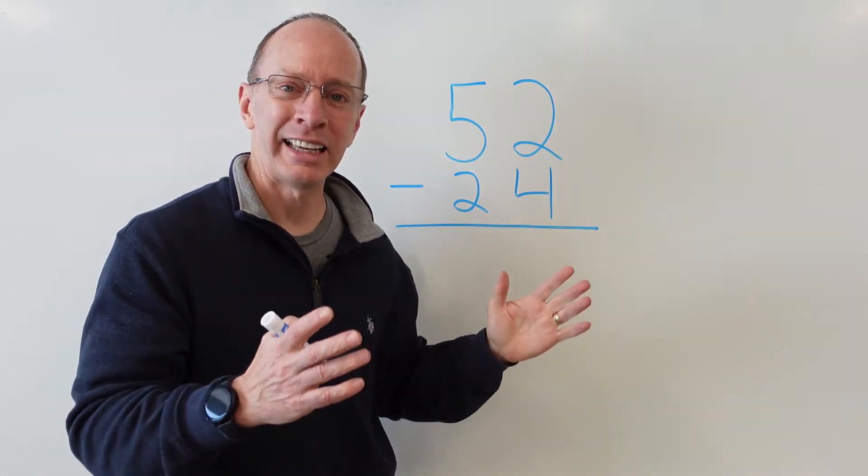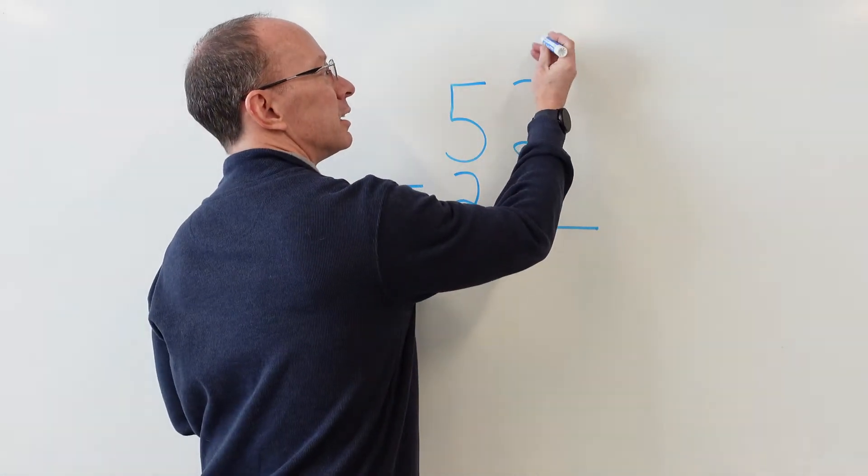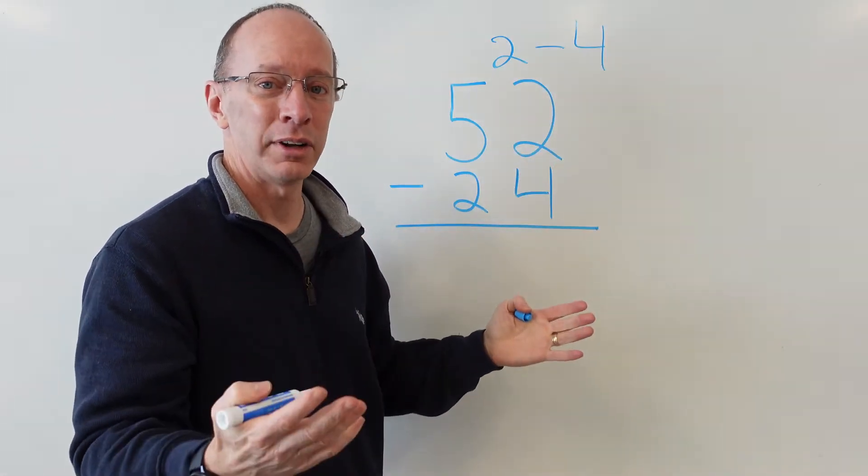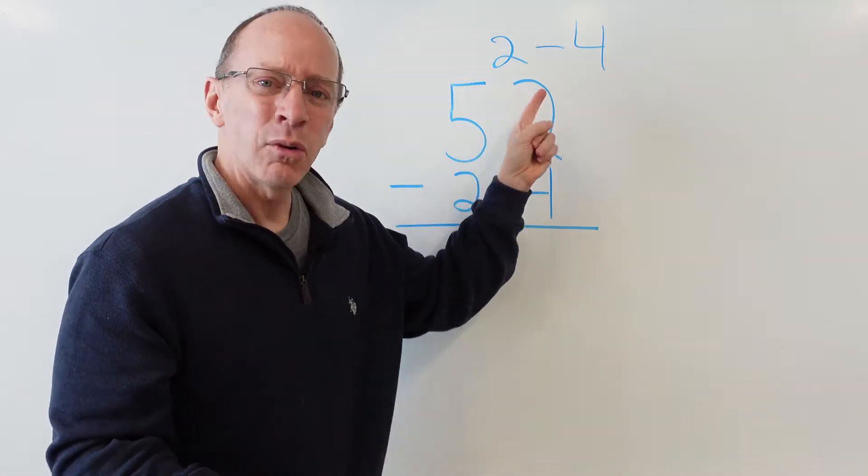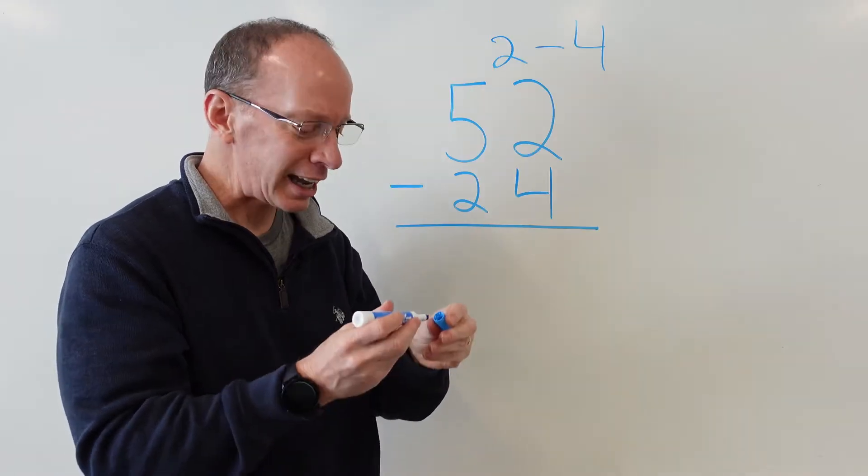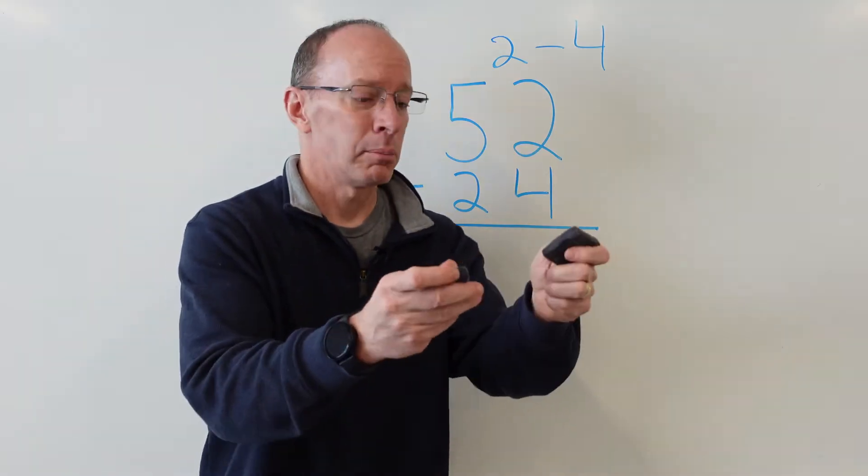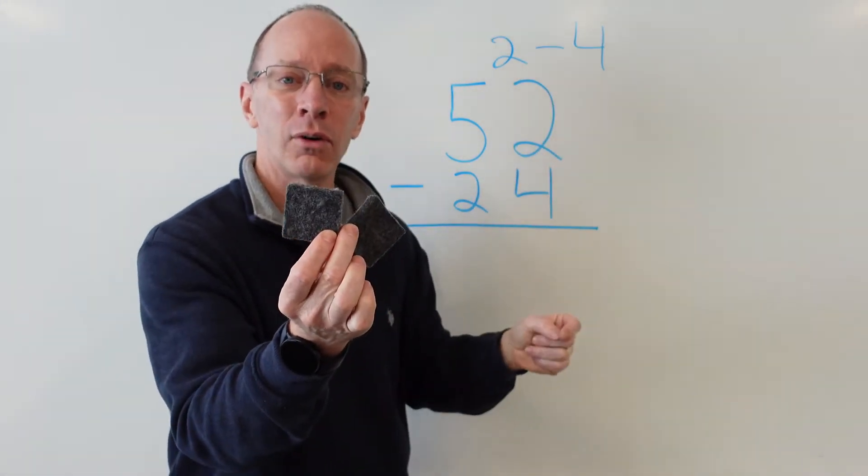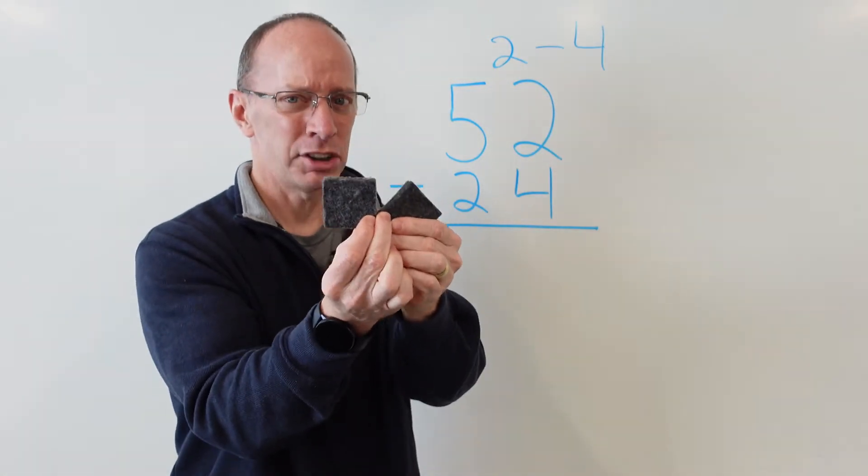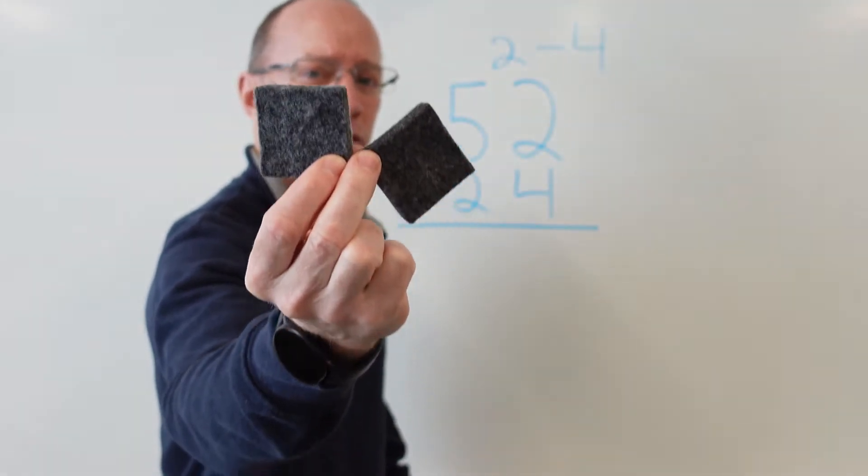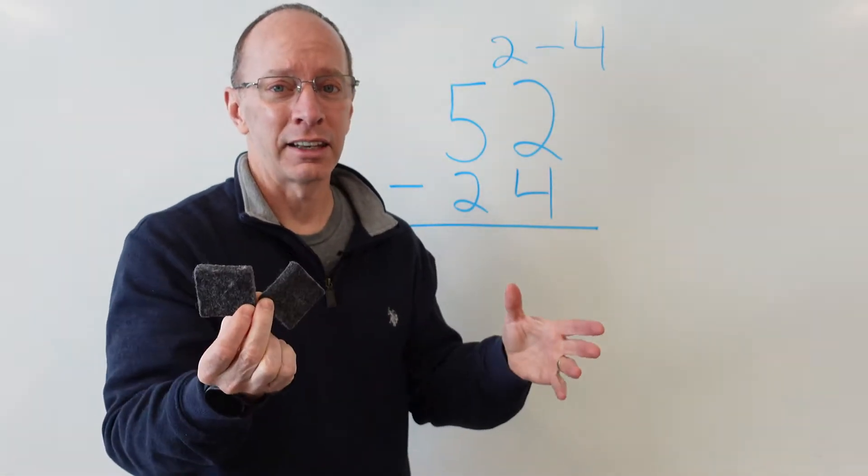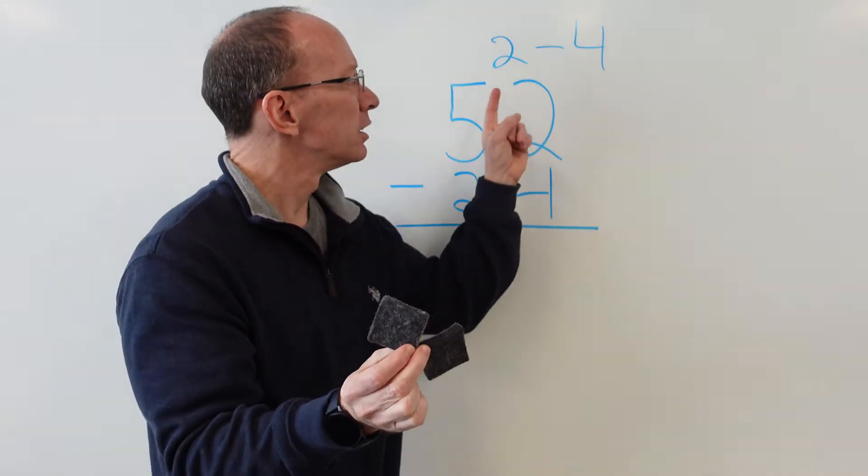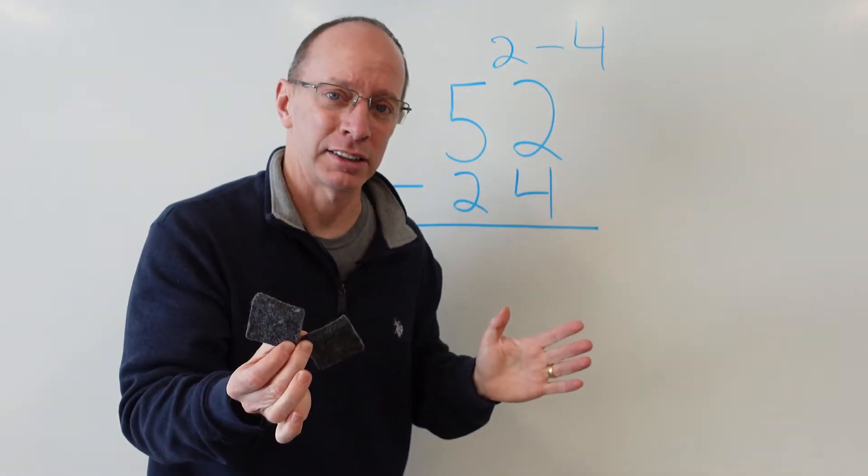Remember back when you were younger, you used to say 2 take away 4. And now we say 2 minus 4, but take away is a good thing to go back to. So that means I have 2 of something. I'm going to grab 2 of my little tiny erasers. I have 2. This is what this problem is saying: 2 minus 4, 2 take away 4. So I have 2 and you take away 4. Can you do it? I only have 2 and you want to take away 4. You can't do it because I only have 2. So we have 2 take away 4 and we can't do that. It's not a big enough number.